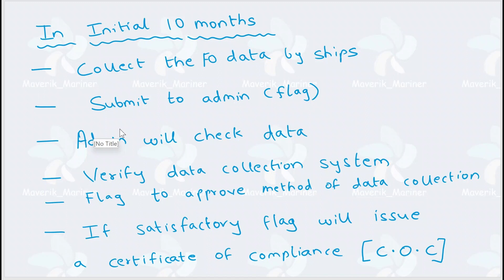In the first 10 months, ships had to collect the fuel oil consumption data and submit this data to admin — meaning the flag state, where the ship is registered. The admin will check and verify the data collection system. The flag's responsibility is to approve the method of data collection. If satisfied, the flag will issue a Certificate of Compliance (COC) to the ship.